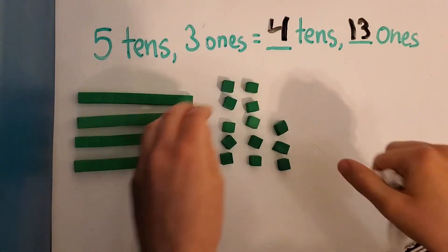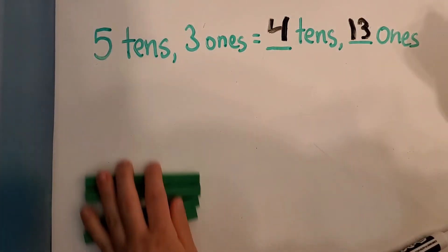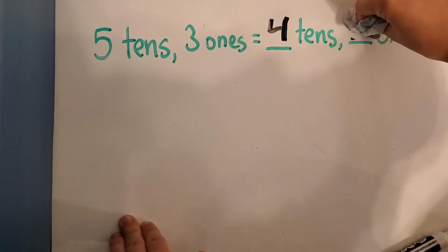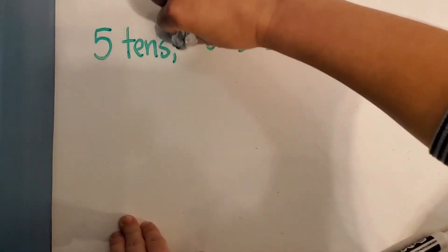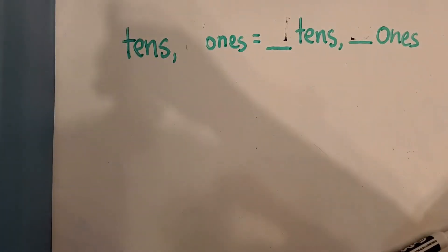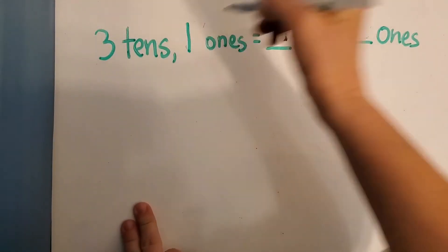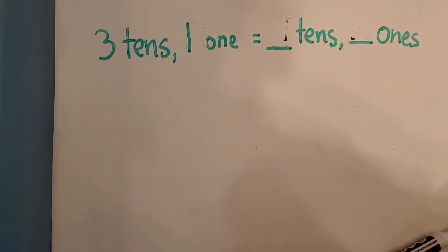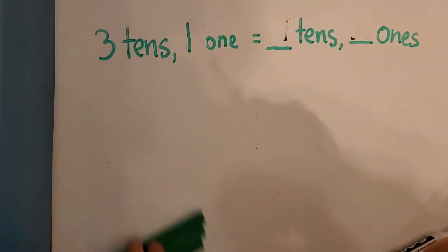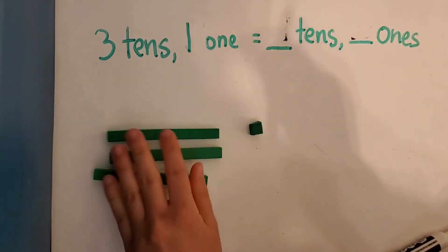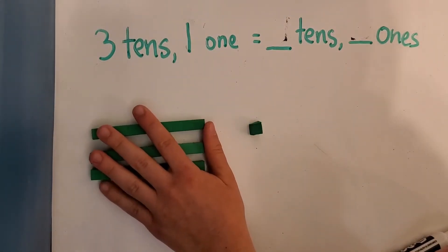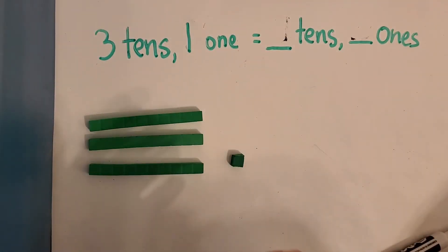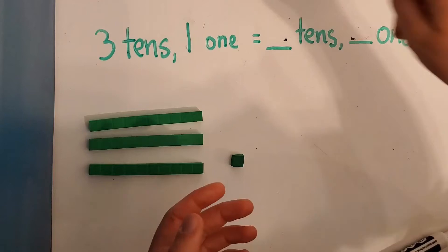Let's try another one. We are going to use three tens and one one. So three tens and one one is equal to? We'll find out. Three tens, one one. What would that be equal to? Well, we're going to regroup the ten as ones.